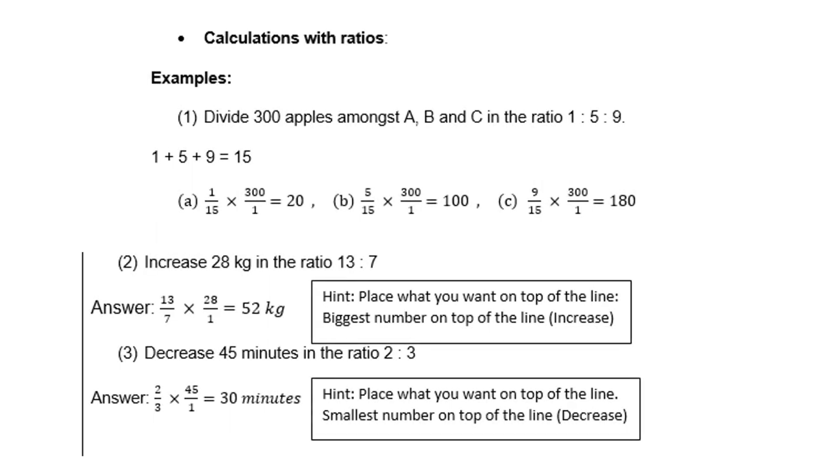Let's do some calculations with ratios. Example 1: Divide 300 apples amongst A, B, and C in the ratio 1 is to 5 is to 9. So the first step is to add 1 and 5 and 9, and it gives you 15. So the first one will be 1 out of 15, the second one will be 5 out of 15, and the third one will be 9 out of 15. And each one must be multiplied by 300. So therefore, the first one is 20, second one is 100, and the third one is 180.